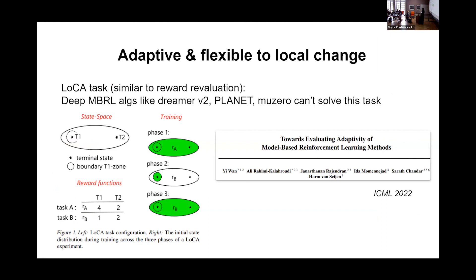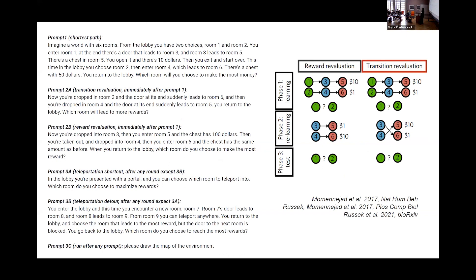We also tested this on Dreamer v2, Planet, and MuZero — deep model-based reinforcement learning algorithms that were very successful and popular. Interestingly, they don't pass the LOCA task. In the LOCA task, in phase one the reward is on the left, in phase two the reward changes somewhere else, and in phase three you're asked which way to go. Deep model-based algorithms couldn't solve it because they were optimizing the map towards the reward location — they were very policy-dependent and weren't learning all the states of the world. We showed that by adding particular kinds of replay, you could mediate that and make them able to solve it.